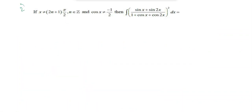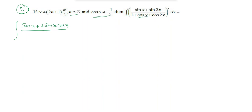Second question: given x₀ = (2n+1)π/2 where n belongs to Z, and cos(x₀) = minus 1/2. Find the integration of (sinx + sin2x) by (1 + cosx·sinx + cos2x)² dx. The numerator sinx + sin2x equals sinx + 2sinx·cosx.